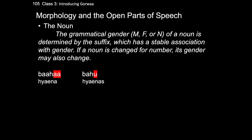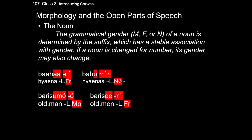Rule four states that it is the noun suffix and not the noun itself which determines gender. As such, when a noun is changed for its number value, its gender value may also change. The word baha, hyena, is feminine in gender, whereas the word bahu, hyena, is neuter in gender. This often manifests in surprising ways: the singular form parisimo, meaning old man, is masculine in gender, but its plural form parise, meaning old men, is feminine in gender.